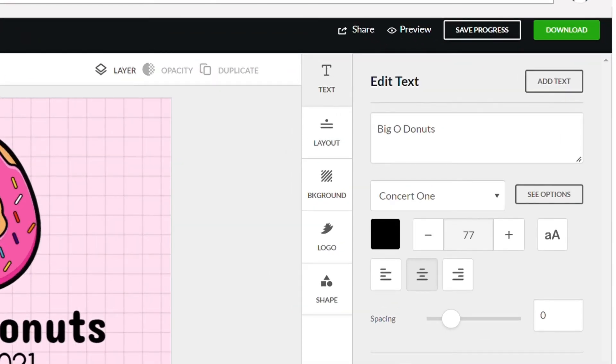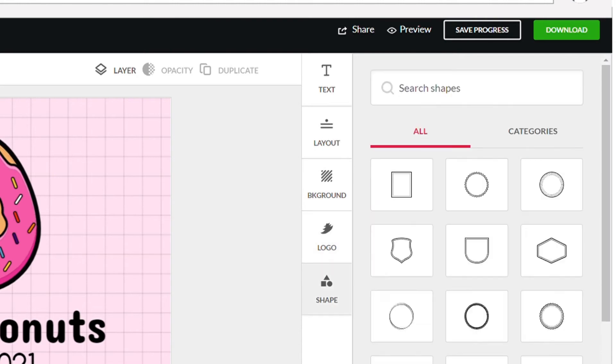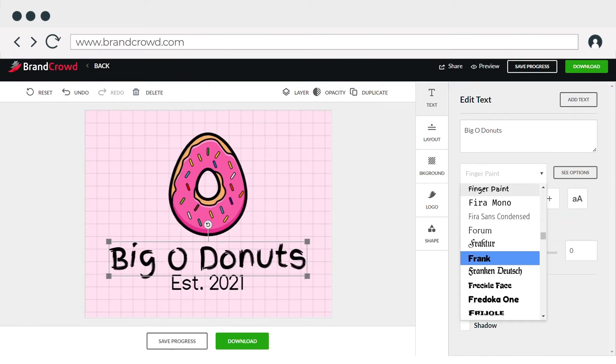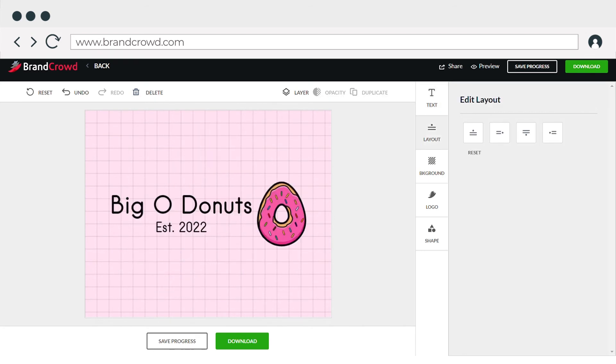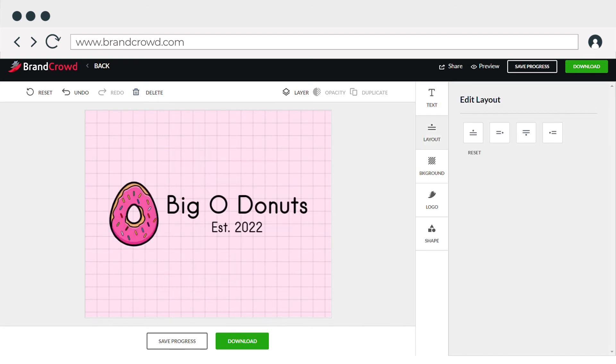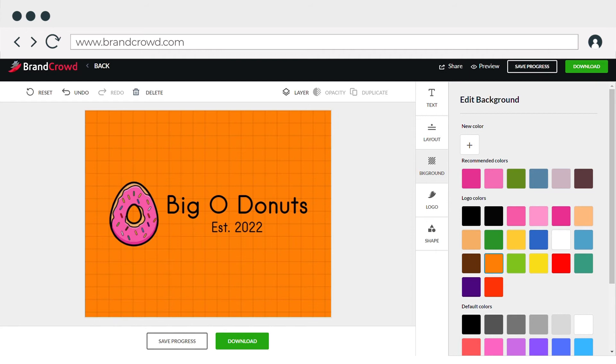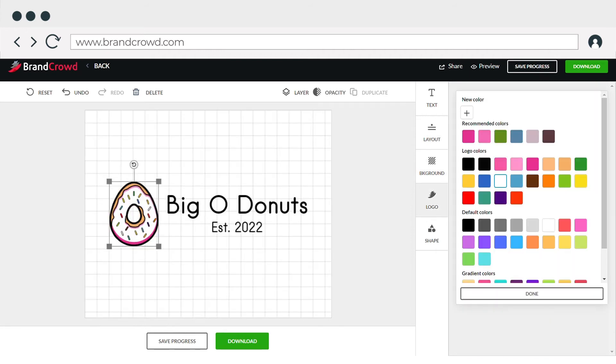You have five areas you can tweak to your liking: Text, layout, background, logo, and shape. You can edit your logo's fonts and words under the text tab, the placement of your visual and text for your final logo. Experiment with the backdrop color you want, and change the colors of your logo too.